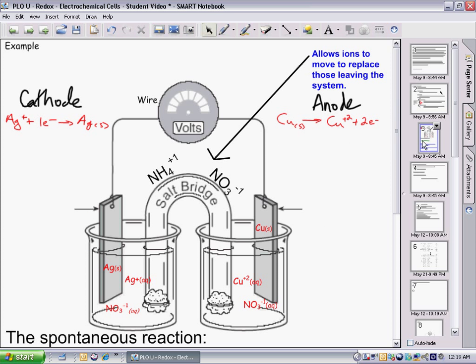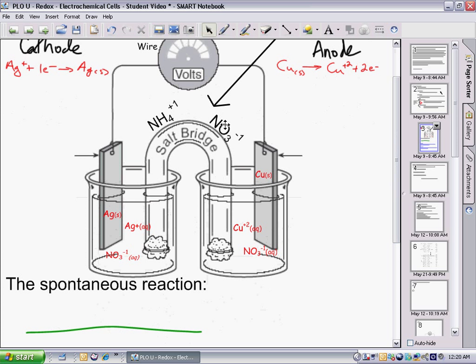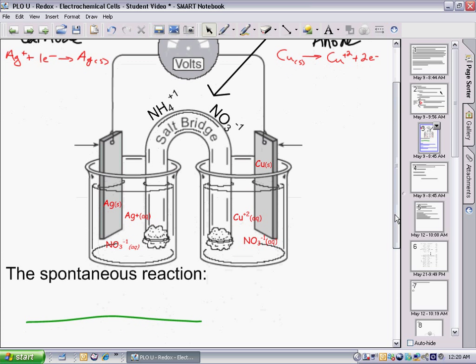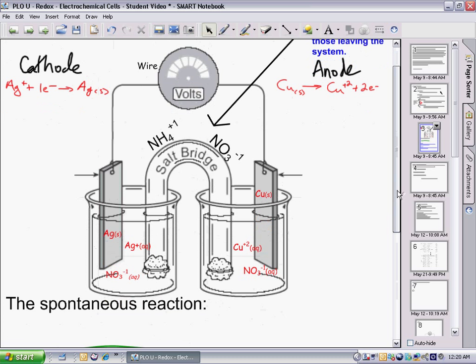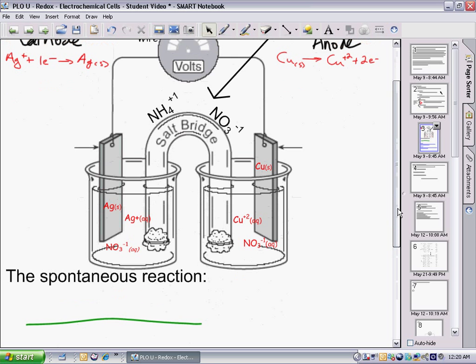To continue on from our example from yesterday, we had our anode and our cathode with silver and copper, our two reactions. At the cathode, it is gaining electrons, so there's our reduction. Here at the anode is our oxidation, as it is losing electrons. They were joined by an ammonium nitrate salt bridge.